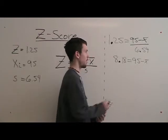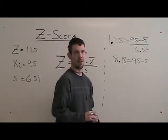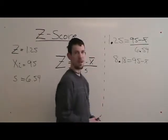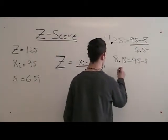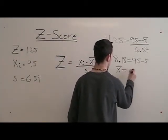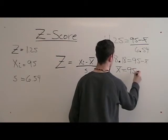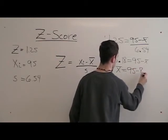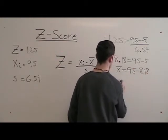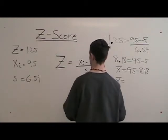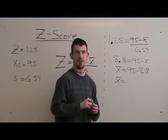The next step is bring the x-bar to the other side of the equals and bring the 8.18 to the other side of the equals. Therefore, your x-bar is 86.82.